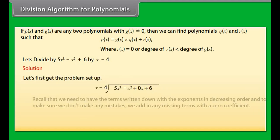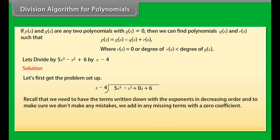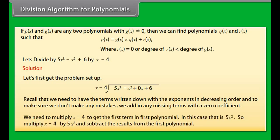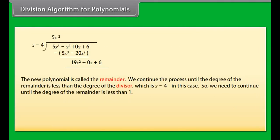Division algorithm for polynomials: if p(x) and g(x) are any two polynomials with g(x) ≠ 0, then we can find polynomials q(x) and r(x) such that p(x) = g(x)·q(x) + r(x), where r(x) = 0 or the degree of r(x) is smaller than the degree of g(x).